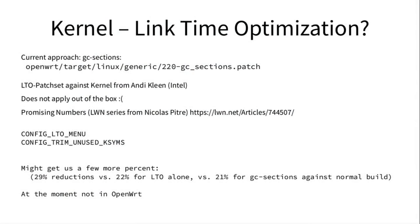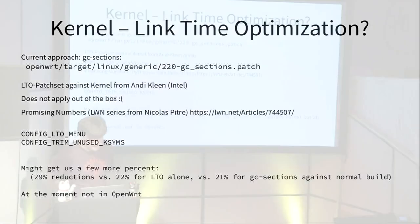The kernel uses a GCC functionality called GCC sections, which collects information while compiling and then uses it to remove unused parts. Link-time optimization is a similar approach but has a lot more information because it comes directly from the compiler. However, there's no official upstream Linux support — there's only a patch set from an Intel developer.